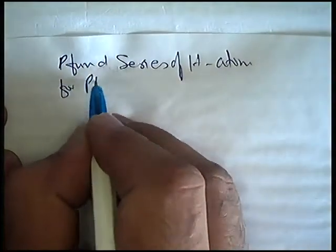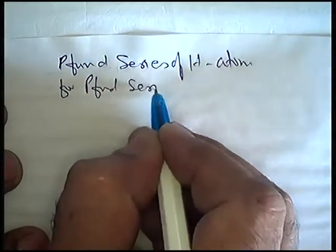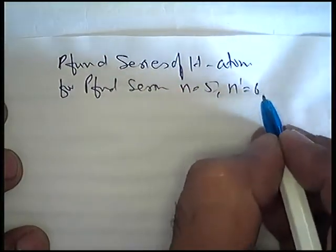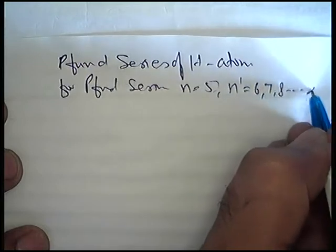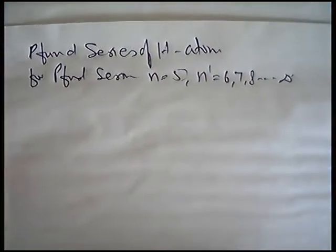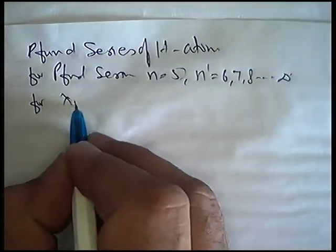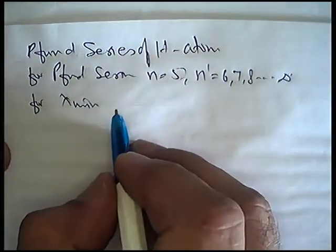For Pfund series, n equals 5, n dash equals 6, 7, 8 up to infinity. Ab iske liye, for lambda minimum, lambda minimum ke liye kya hoga?